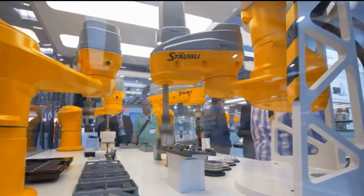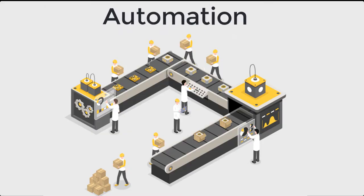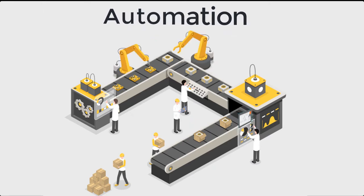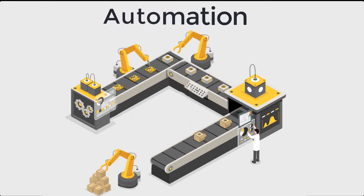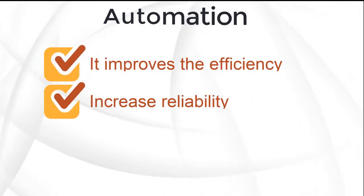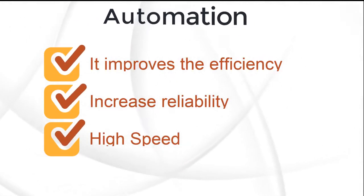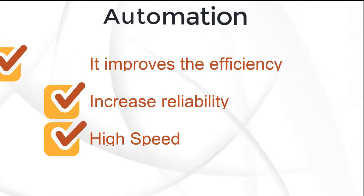We can define automation in these words: Automation is the creation and application of technologies to produce and deliver goods and services with minimal human intervention. The implementation of automation technologies, techniques, and processes improves the efficiency, reliability, and speed of many tasks that were previously performed by humans.